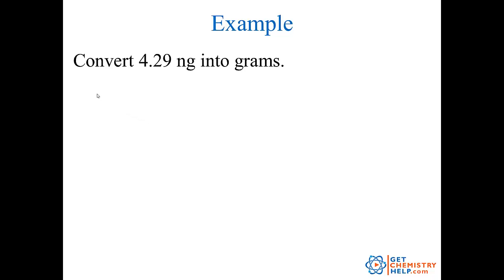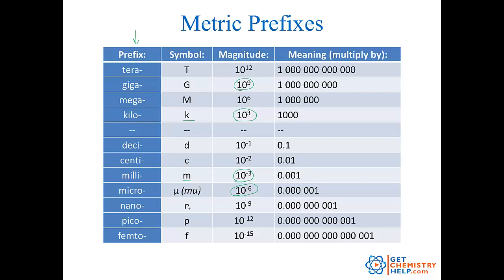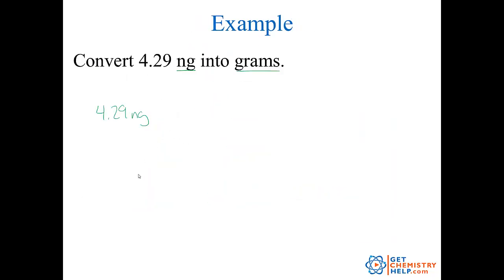So keep that in mind, and let's do a couple of conversions just to see how this works. Our first one says, convert 4.29 ng, so something grams, into grams. Okay, 4.29 ng. Okay, let's go back and see what n means. N is nano. N is nano. And nano means ten to the negative ninth.